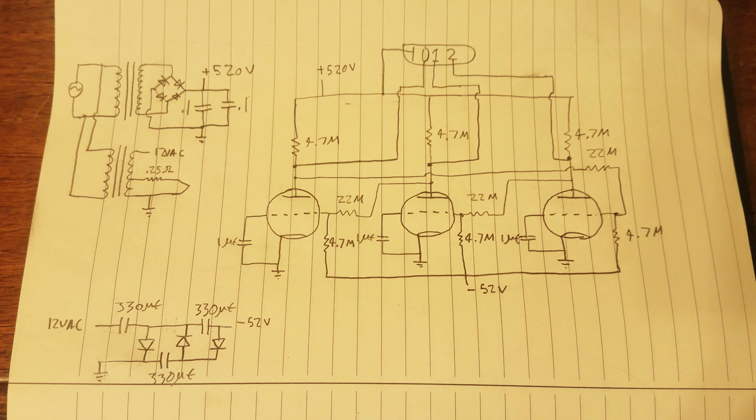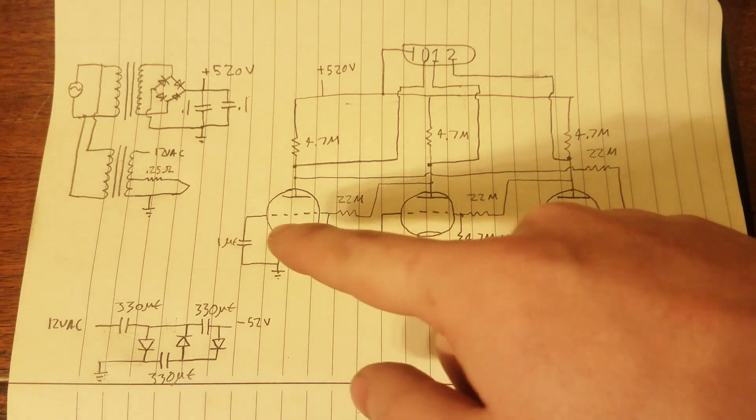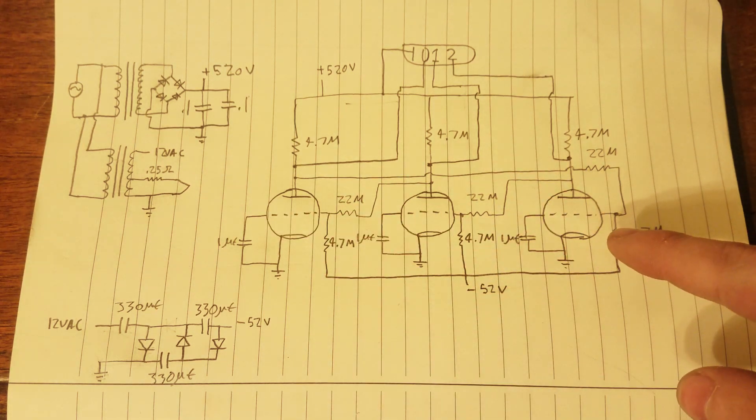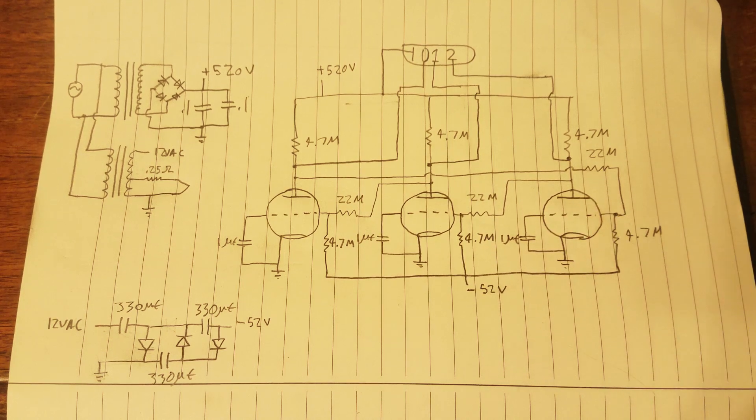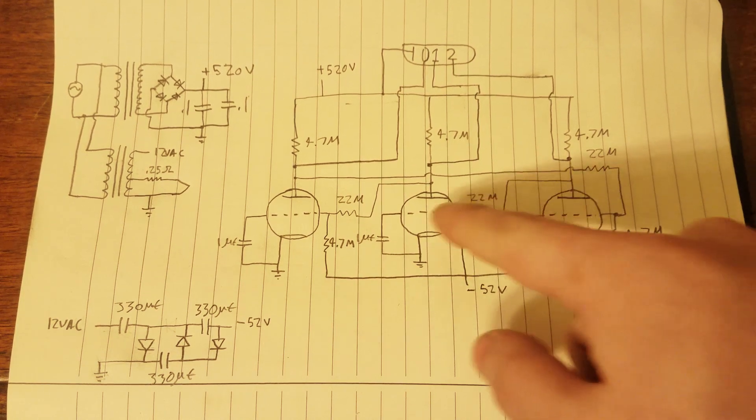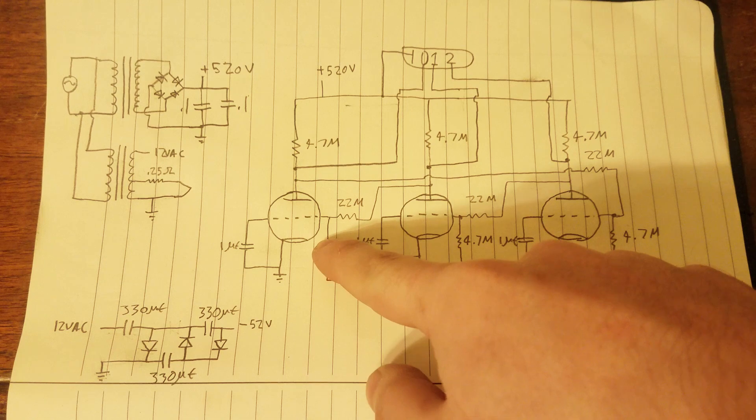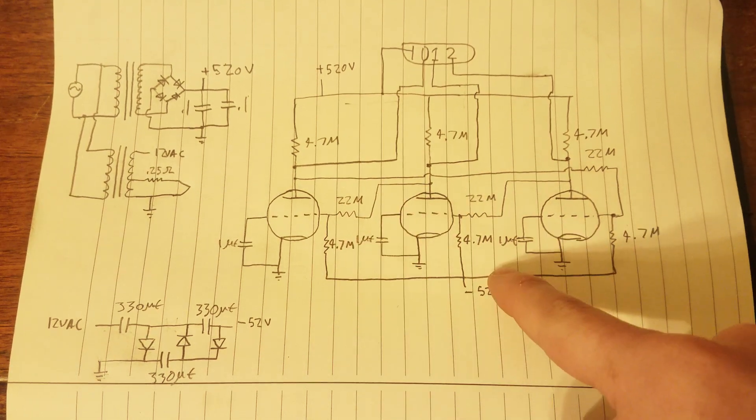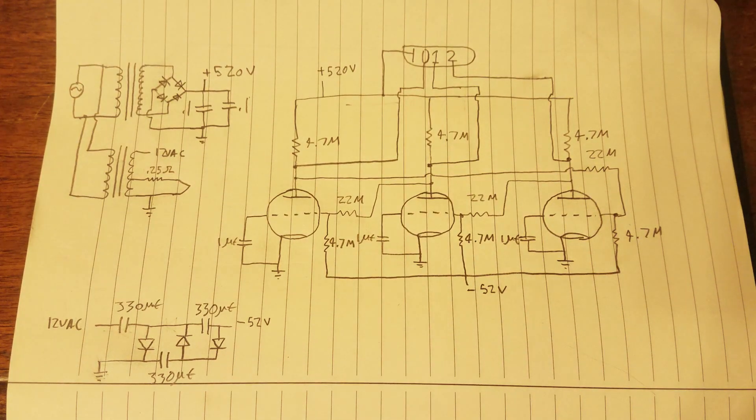And here you have the capacitors that actually charge and discharge and form the oscillator along with the resistors. The easiest way I can think to explain this is as a group of inverters with delay. Each one of these tubes is configured as an inverting amplifier.